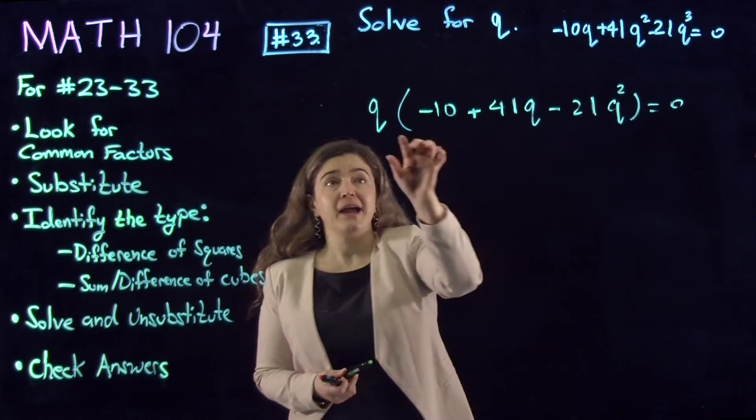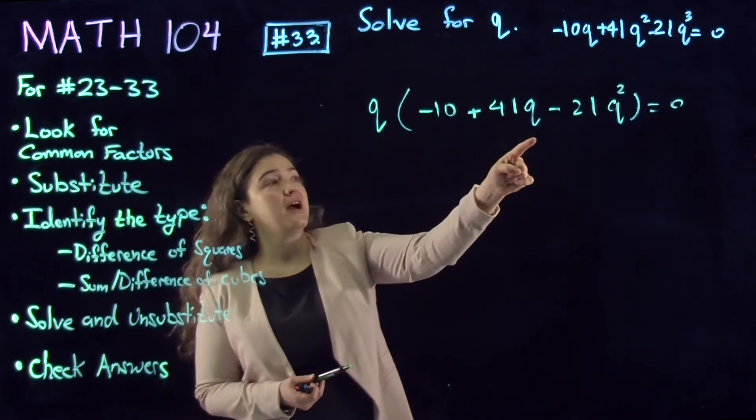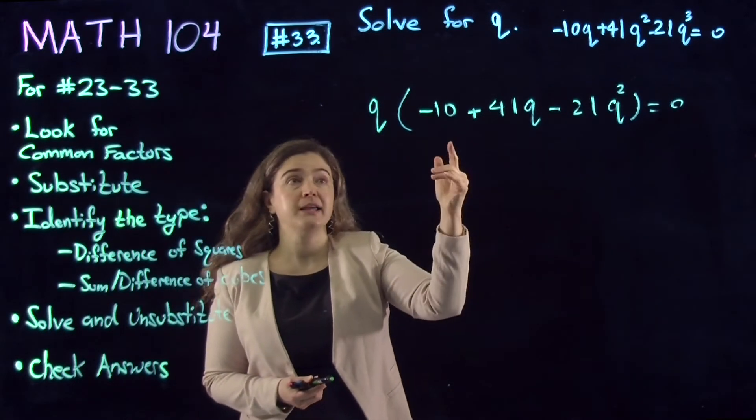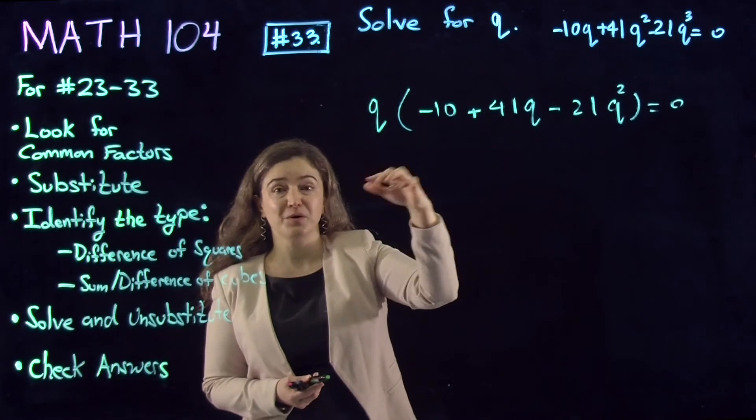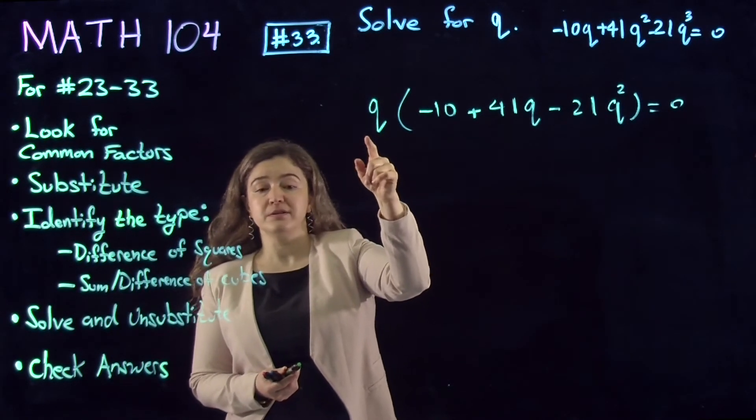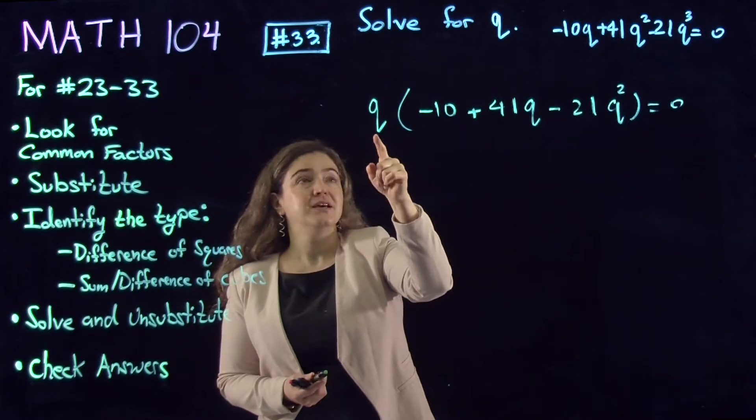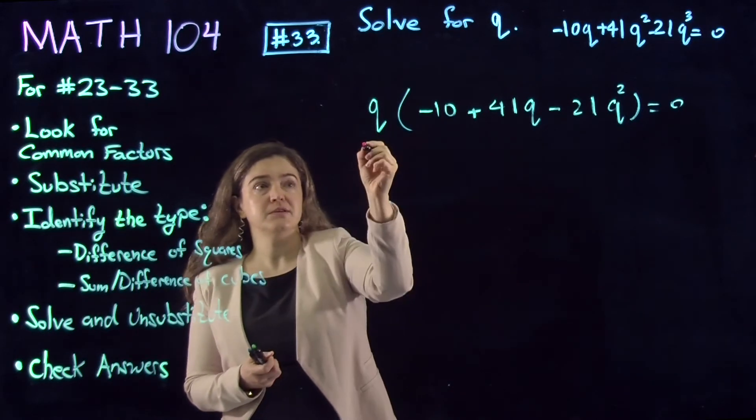Now I have a linear factor, and I have a quadratic factor. I can set each of them equal to 0. The linear factor is very easy to solve. It gives you q = 0.